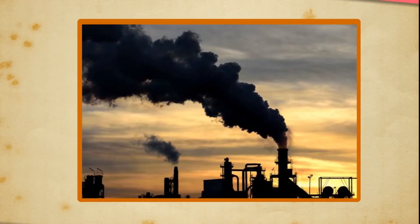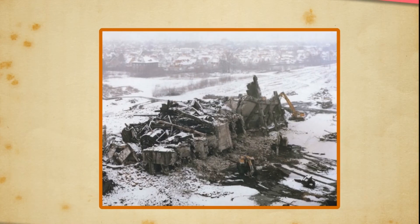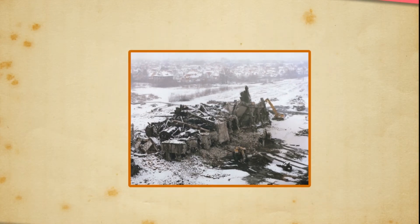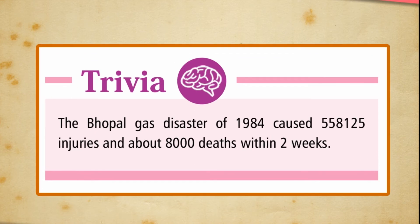Environment is something that people over generations will share and it could not be destroyed merely for industrial development. Trivia: The Bhopal gas disaster of 1984 caused 558,125 injuries and about 8,000 deaths within two weeks.